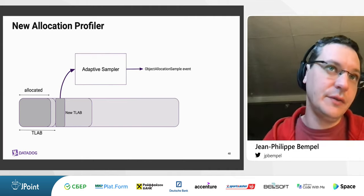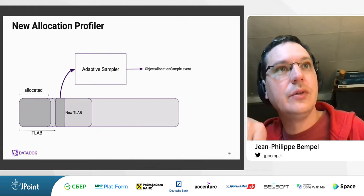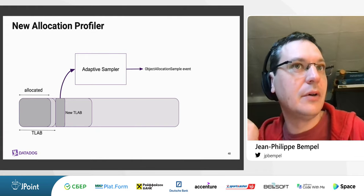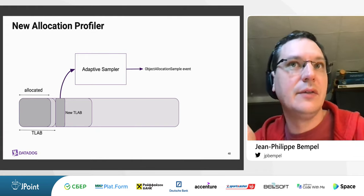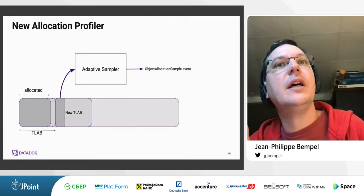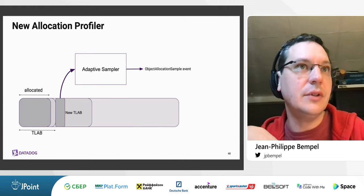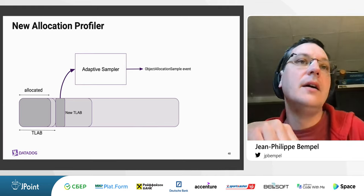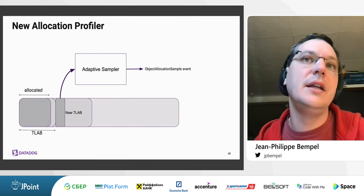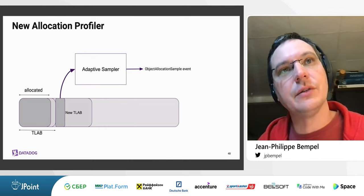With this new event, when we retire a TLAB, the emitted event goes into an adaptive sampler as described before, which tries to maintain a constant given rate of 'ObjectAllocationSample' events in any situation — dropping some if needed. This throttling mechanism is generic enough to be reused for any other JFR events that may behave in a similar fashion.